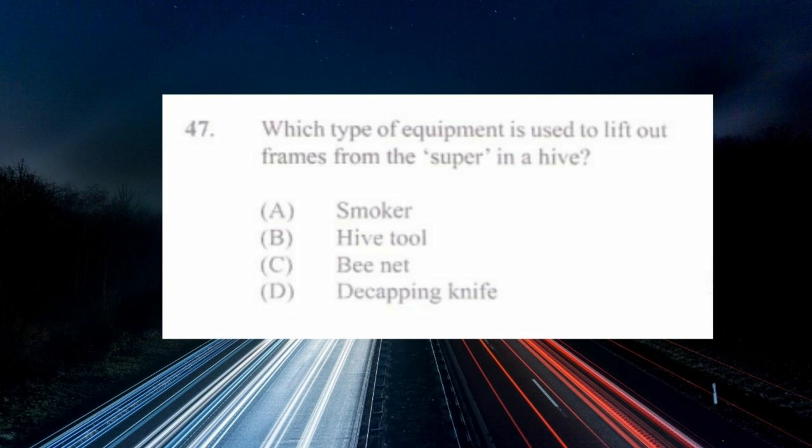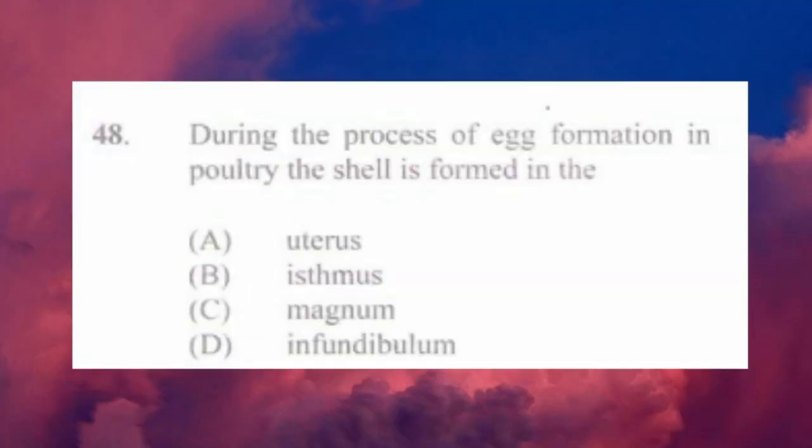Question number forty-seven: which type of equipment is used to lift out frames from the super in a hive? a) smoker, b) hive tool, c) bee net, d) decapping knife. The answer is b) hive tool.